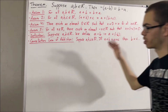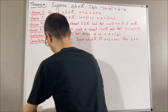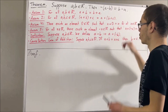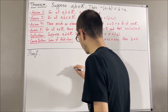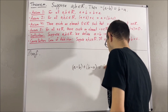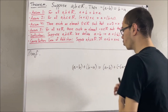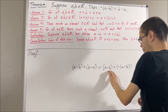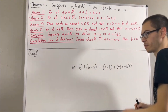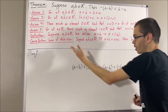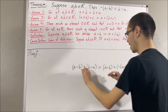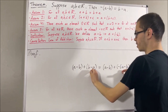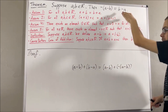So now let's get into proving this theorem. The way we're going to prove that these two quantities are equal is as follows. We're going to show that a minus b plus b minus a is equal to a minus b plus the negative of a minus b. From here, we can apply the cancellation law of addition and cancel out the a minus b's, so we're left with b minus a equals the negative of a minus b, which is exactly what we want.